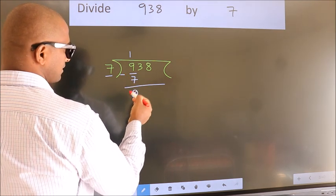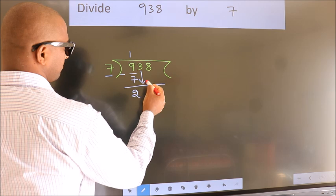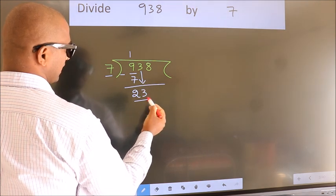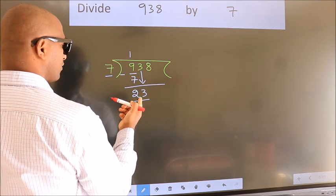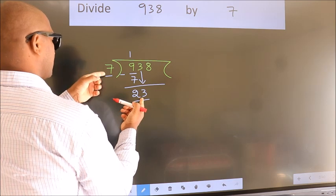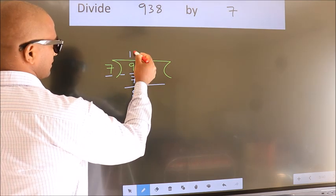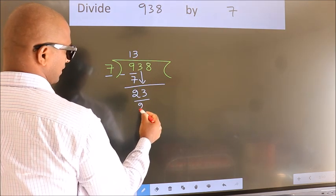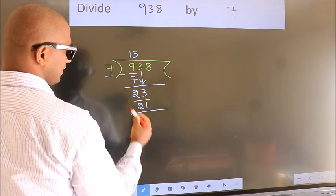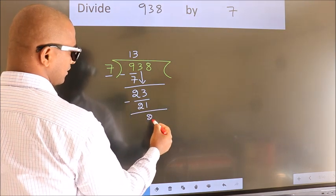After this, bring down the beside number, so 3 down, so 23. A number close to 23 in the 7 table is 7 threes, 21. Now we subtract, we get 2.